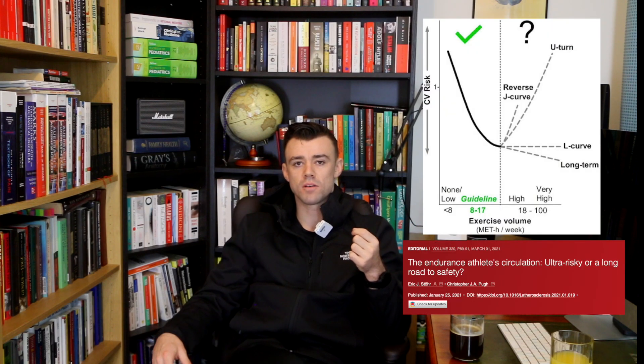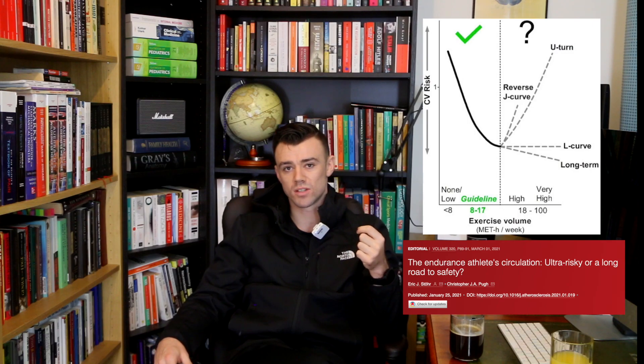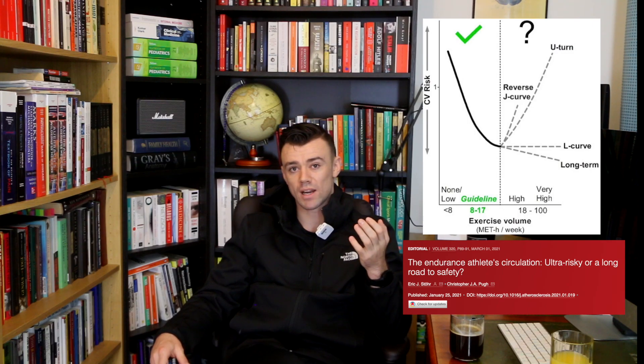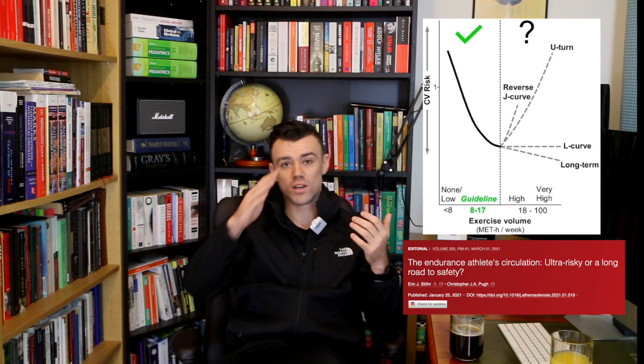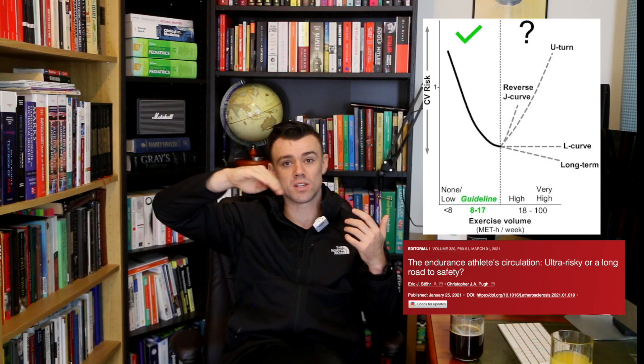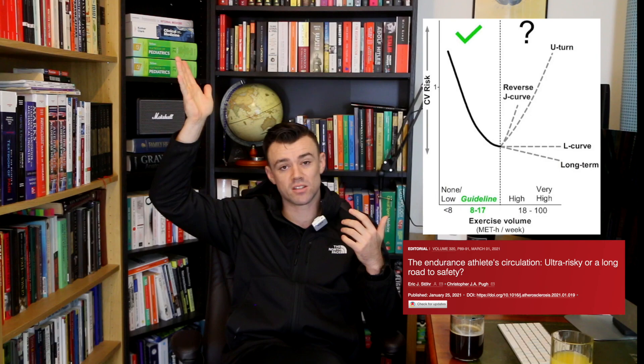This goes against the extreme exercise hypothesis, which poses that there's a U-shaped relationship where when you get up to very high levels of exercise, your risk of health problems actually begins to increase again. We just don't see much evidence of that being the case. Of course, depending on the sport there might be individual risks, and there might be other factors that put athletes at risk such as taking performance-enhancing drugs or early retirement and the subsequent lifestyle they live.